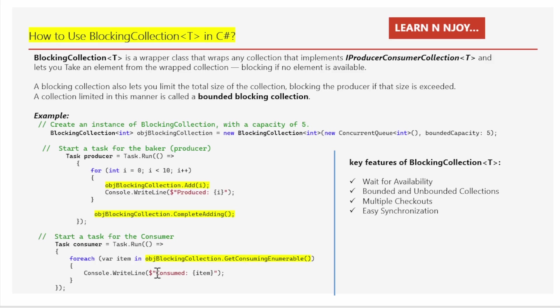This loop will end when CompleteAdding is called and all items are consumed. Finally, I am just printing what item has been consumed — Console.WriteLine("Consumed: " + item). Each consumed item is printed to the console window. The Producer task adds items to the blocking collection and if the collection reaches its capacity, the producer will wait until the consumer makes space.